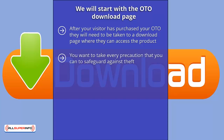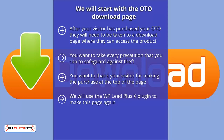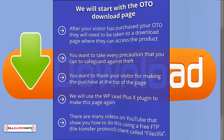The first step is to use a complex name for the page so that it cannot be easily guessed. Don't call it download or your product name. You want to thank your visitor for making the purchase at the top of the page. We will use the WP Lead Plus X plugin to make this page again. Before you start on this, it is a good idea to upload your OTO product in the form of a PDF document to your web hosting. There are many videos on YouTube that show you how to do this using a free FTP client called FileZilla. You must remember the name of your file and its location.